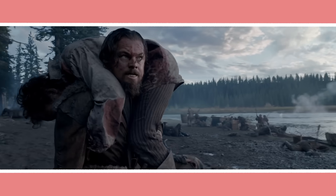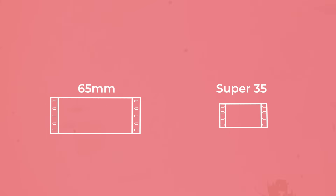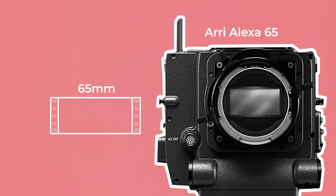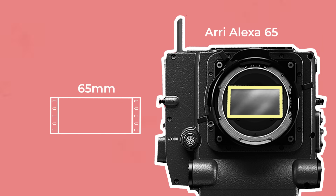Originally the 65mm format was based on using 65mm gauge film, which was 3.5 times as large as standard 35mm and measured 52.6x23mm, using 5 vertical perforations with a widescreen aspect ratio of 2.2 to 1. The Alexa 65 has a digital sensor that matches 65mm film and is a viable digital version of this format.